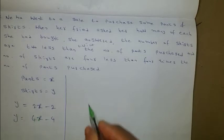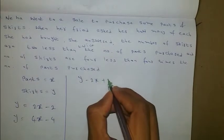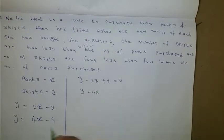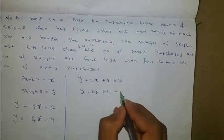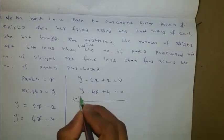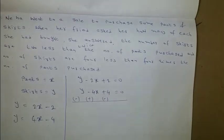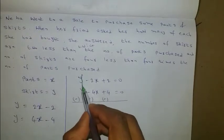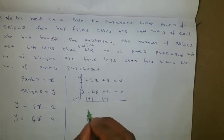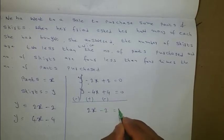Taking everything to the left side: first equation becomes minus 2x plus y plus 2 equals 0; second equation becomes minus 4x plus y plus 4 equals 0. Subtracting: y terms cancel, minus 2x plus 4x gives 2x, and plus 2 minus 4 gives minus 2, so 2x minus 2 equals 0.